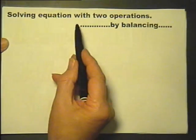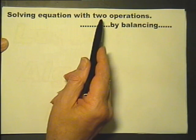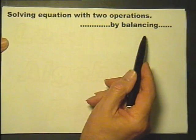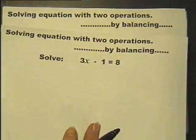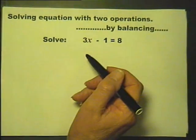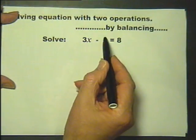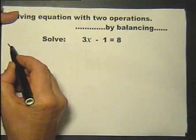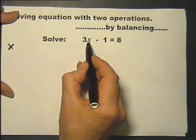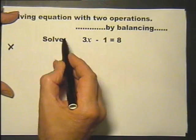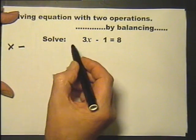Moving on to solving equations that have got two operations and still using balancing of course. So here's an equation we're going to solve for x but it's got two operations in there. It's got operation of multiplication because it's being multiplied by 3 and it's got the operation of subtract. So we've got two operations.